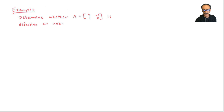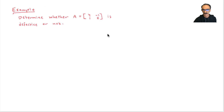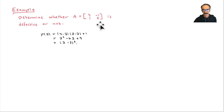Let's take another example: determine whether A equals [4, negative 1; 1, 2] is defective or not. We find lambdas, find eigenvectors, and if we don't have enough vectors we call it defective. Here n equals 2, so we need two vectors for non-defective. The characteristic polynomial, the determinant of A minus lambda I, gives (lambda minus 3) squared — so lambda equals 3 repeated twice.